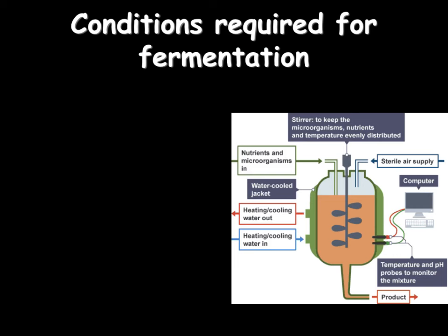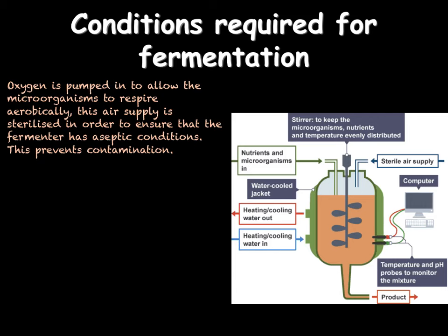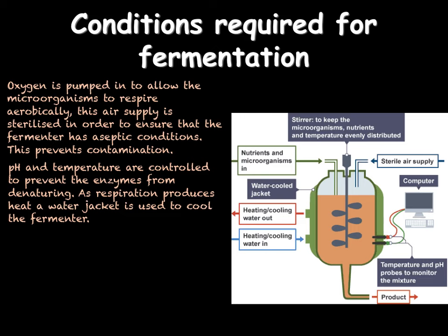What conditions are required for fermentation to take place? Various things need to be controlled to make sure the microorganisms grow correctly. First, oxygen is piped in, which enables the microorganisms to respire aerobically. Obviously, if we were making something which needed anaerobic respiration, we would not have the oxygen. The air being pumped in is also aseptic — it is sterilised before it enters — which prevents contamination from other microorganisms. This ensures that the right pH is available for the microorganisms to grow.